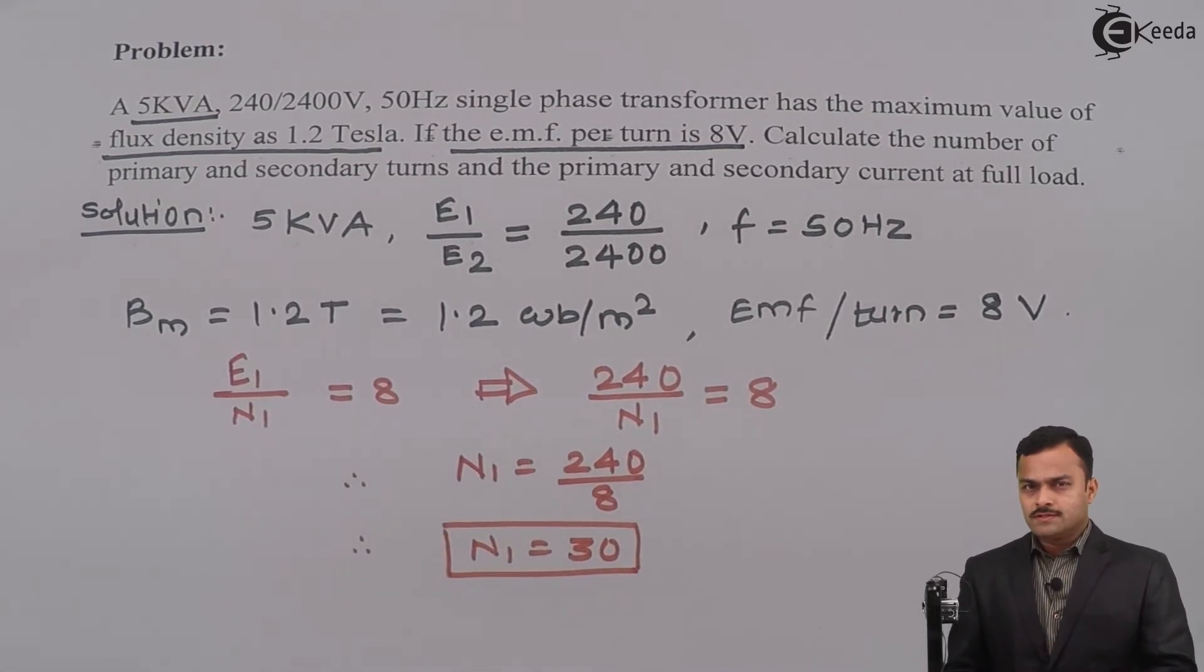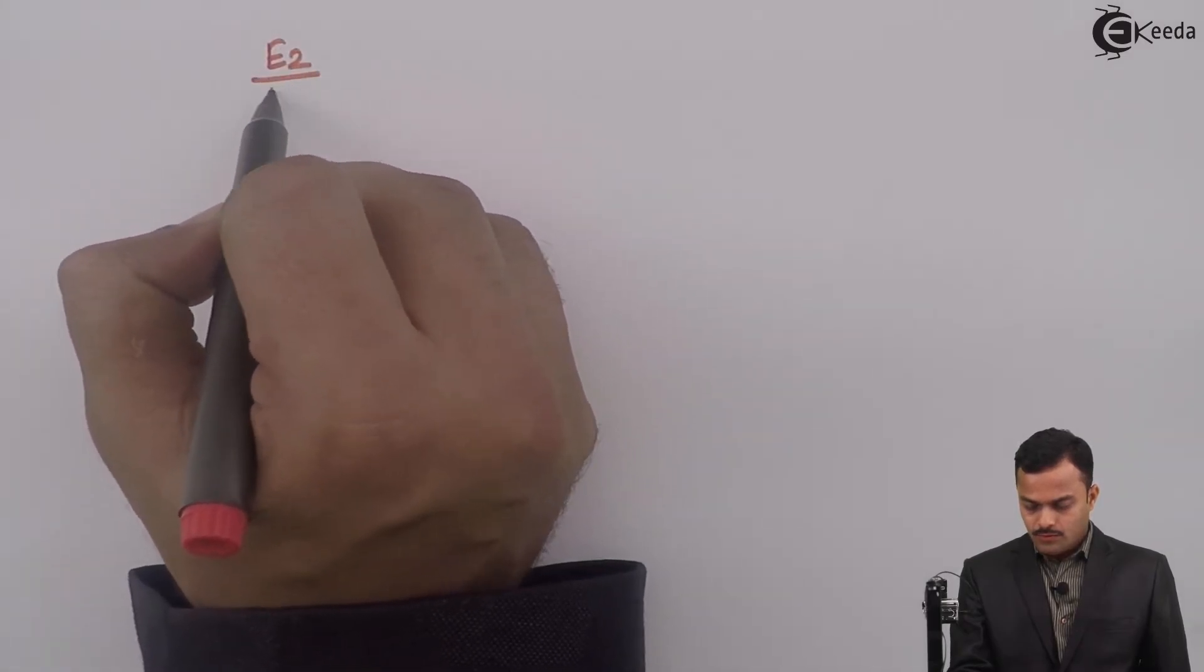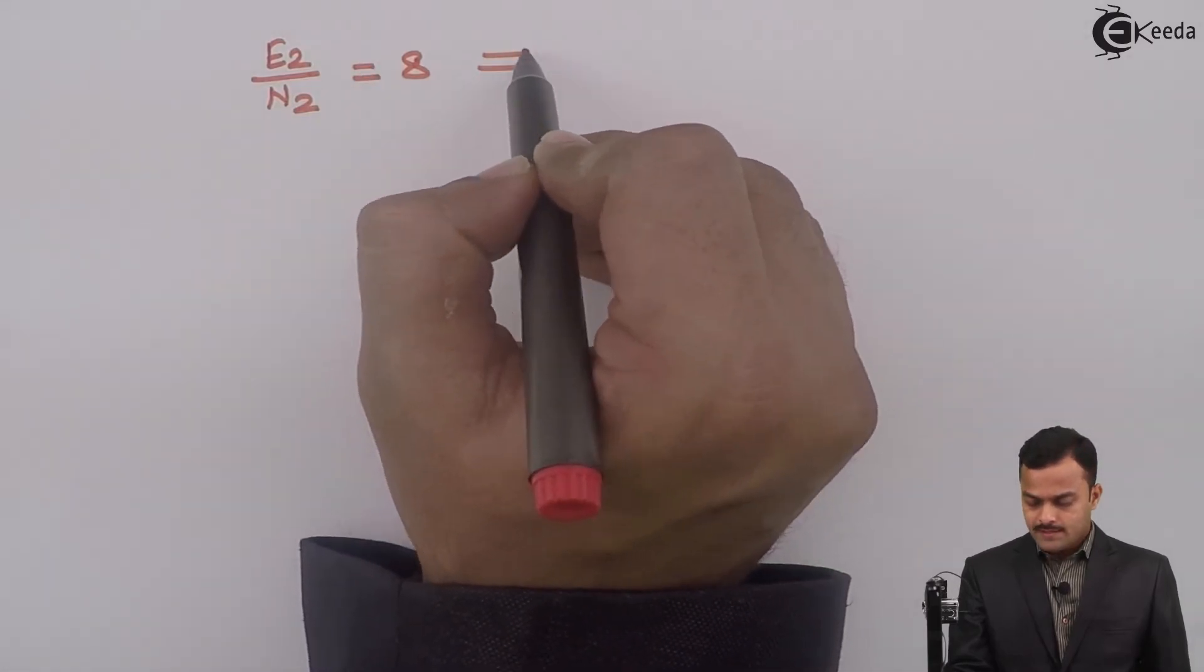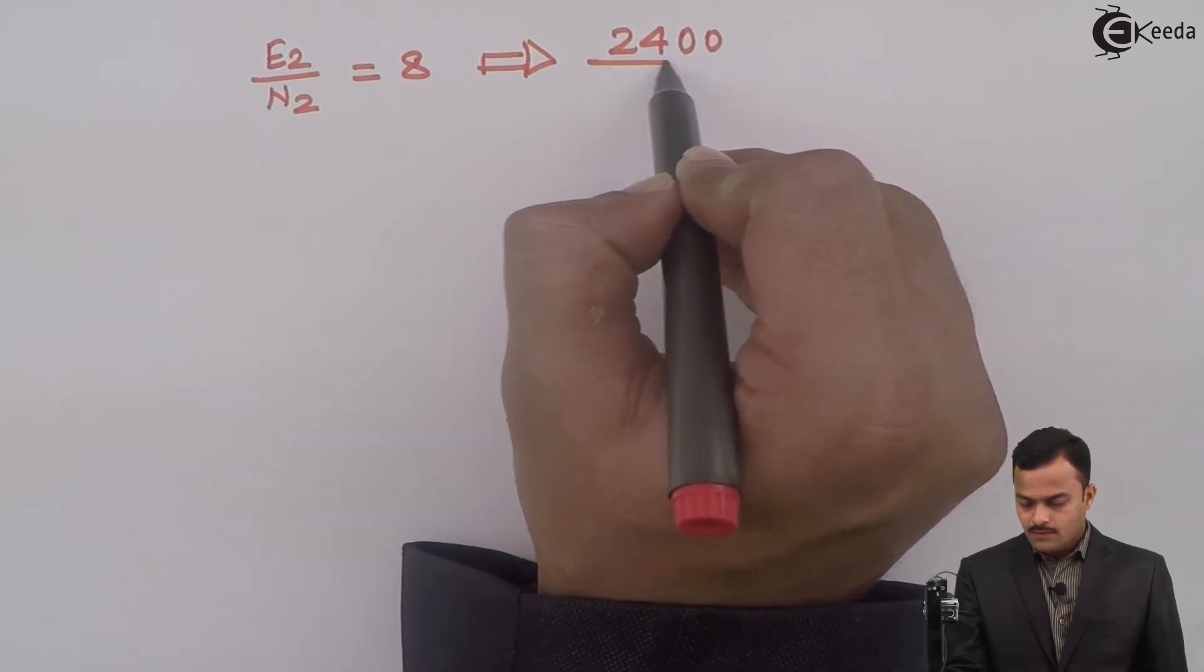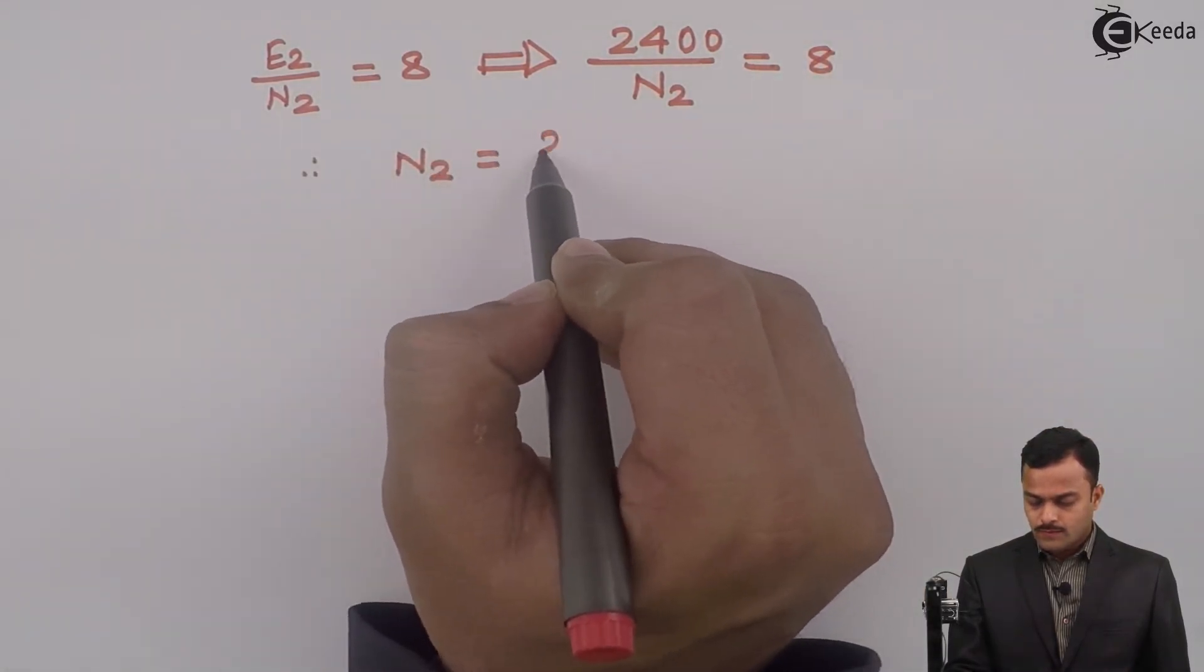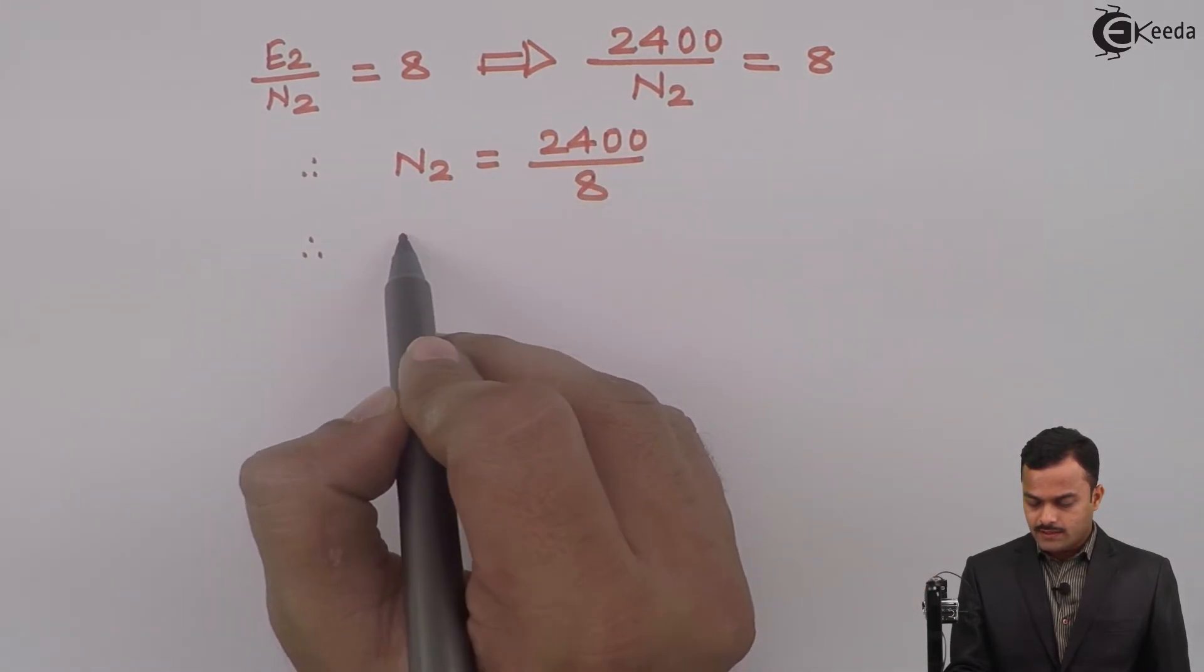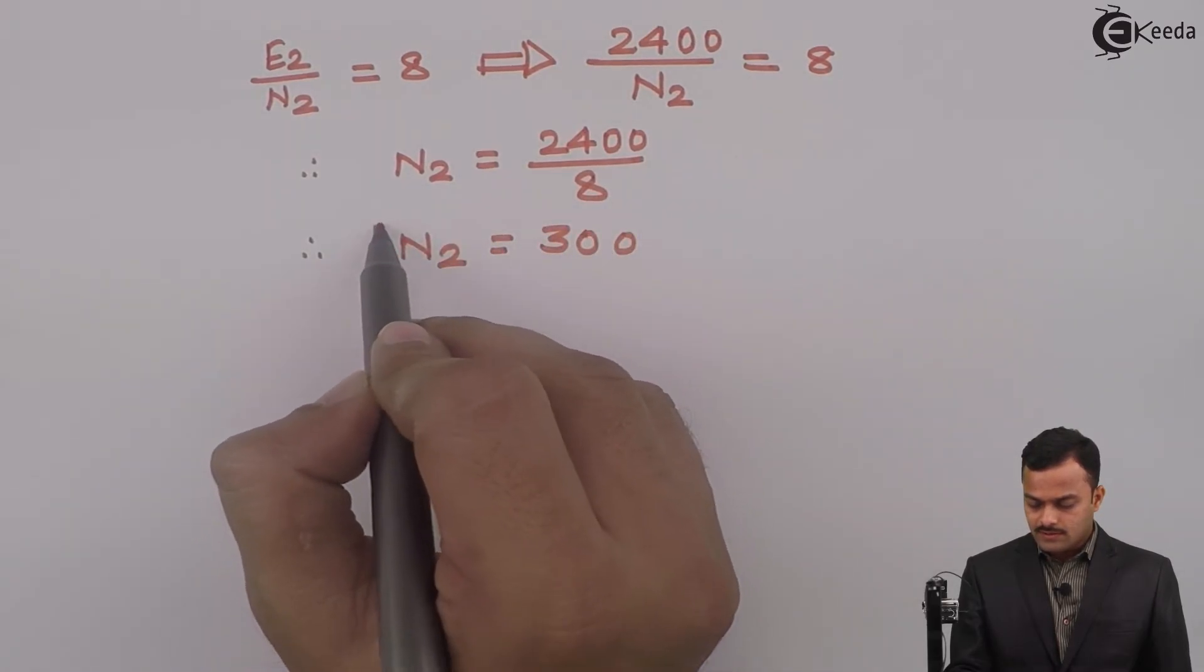Same logic I will use for the secondary side. So, for a secondary side EMF per turn is given as E2 upon N2 equal to 8. That implies E2 is 2400, number of secondary turns N2 equal to 2400 divided by 8. If you solve you will get N2 equal to 300. So, 300 turns on the secondary side.